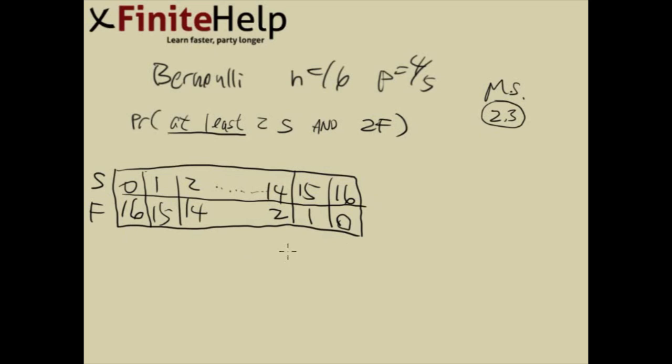So here we have our 16 different scenarios with 0 success, 16 failures at first. And then 1 success, 2 success, all the way to 16 success. And here we're looking at least 2 success and at least 2 failures. So here's at least 2 success. Here's at least 2 failures. And anything in between is going to be at least 2 success, 2 failures. As you can see, these are way too many checks.